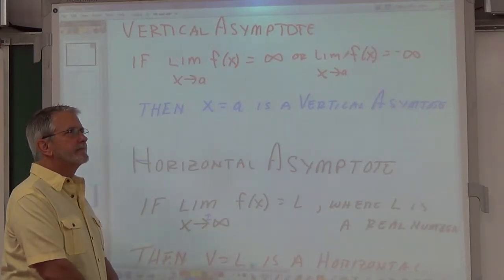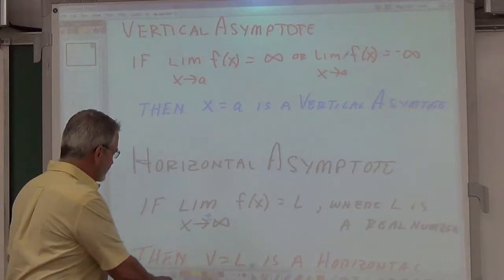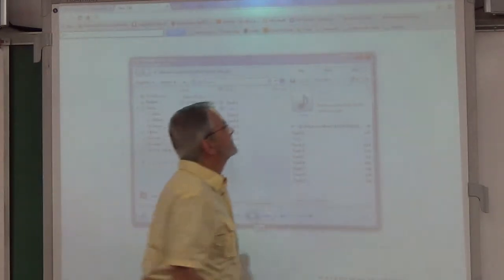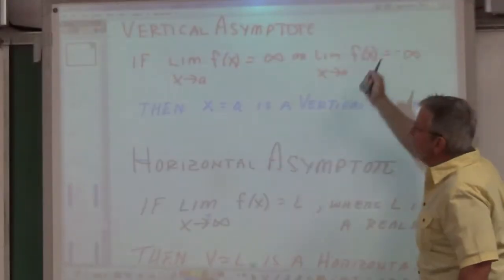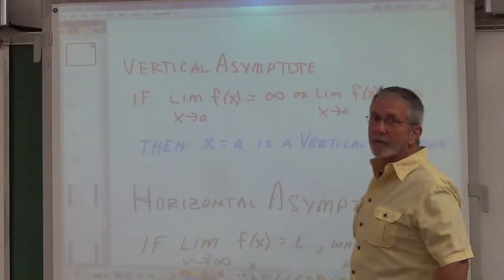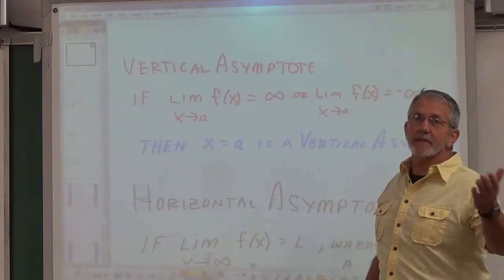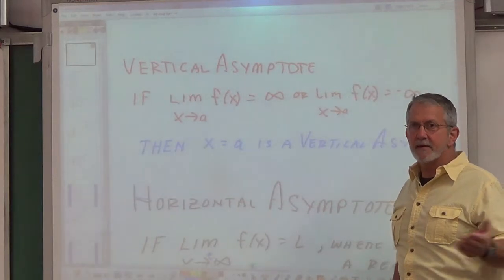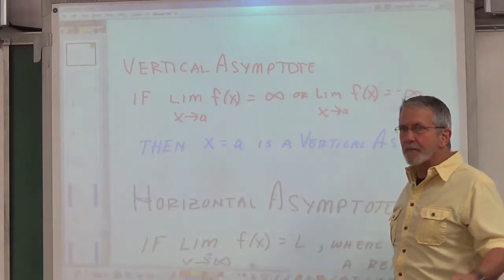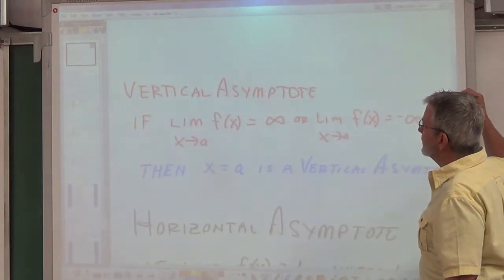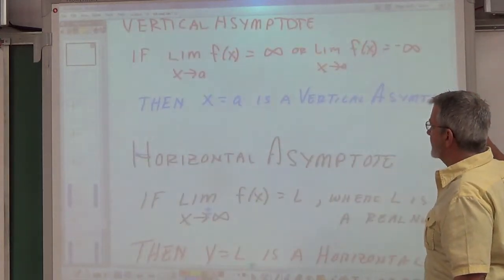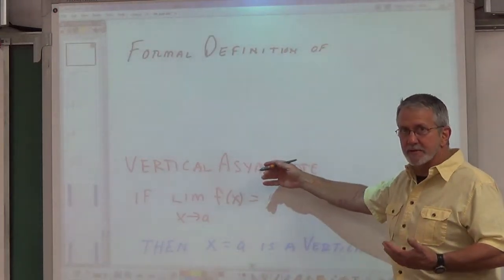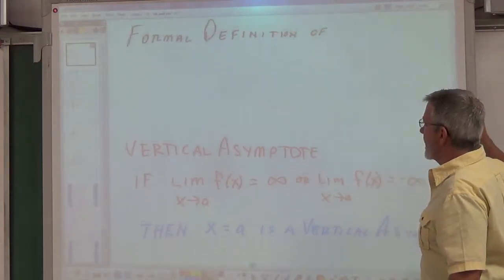This is my message to you today from Uncle Lee. Today's message is something extremely simple, something we've been talking about all of last year in PreCalculus. We talked about it a lot this year too: vertical asymptotes and horizontal asymptotes. We're going to talk about the formal definition of these. Last year we talked about them very informally.